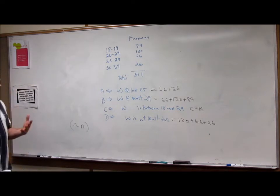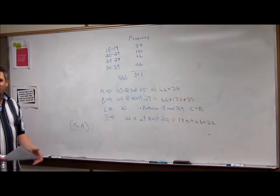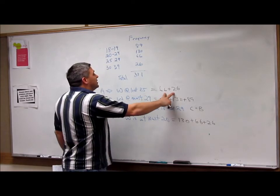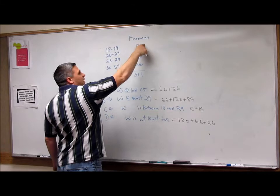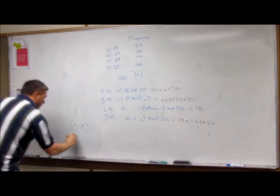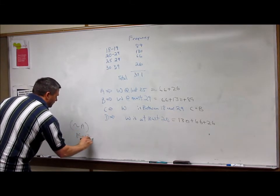I'm saying I want the frequencies that have to do with everything not A. So what I'm saying is, everything that doesn't have this and this. So I'm saying it's this. So it's 89 plus 130.